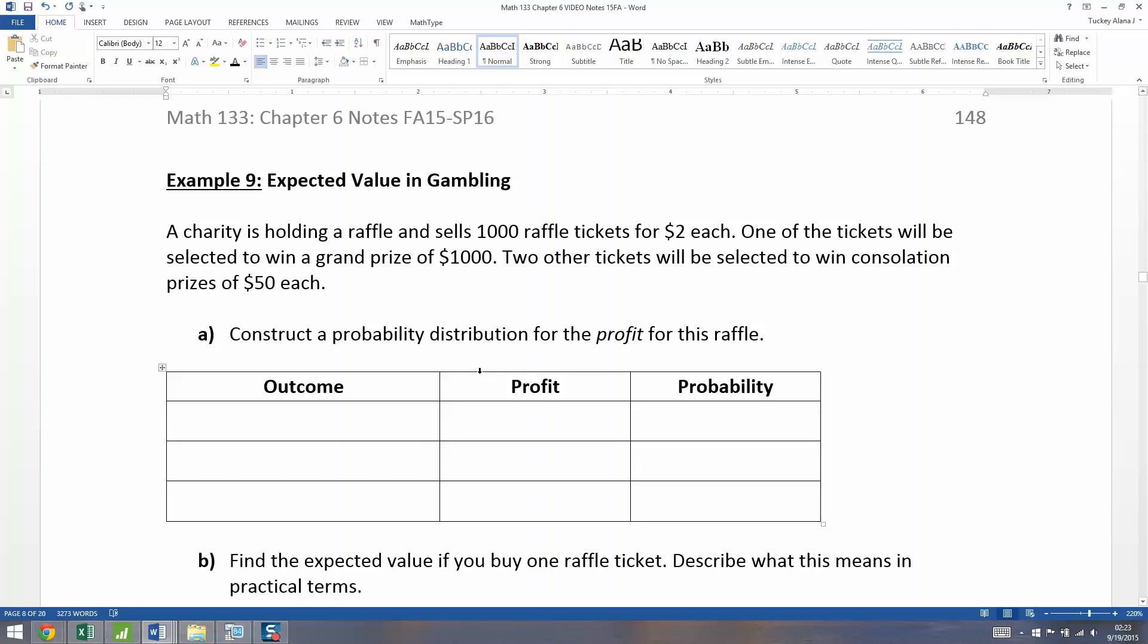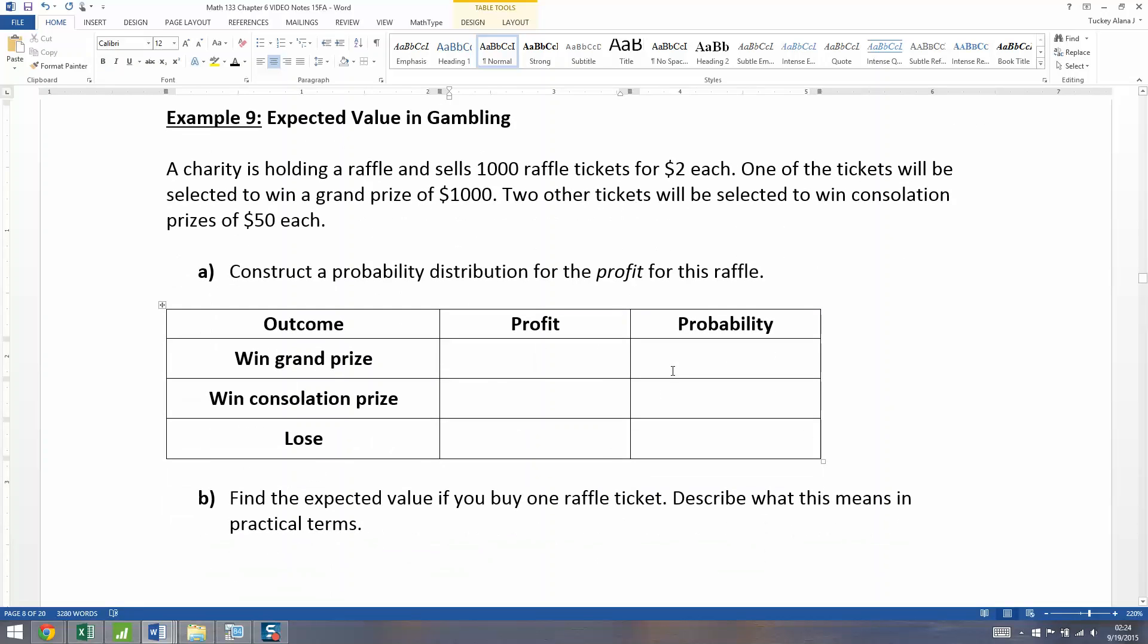Now, what about that gambling CEO? Let's suppose that person's going to a charity raffle, because expected value is a very big deal with gambling. We're going to analyze it a few different ways. So if the charity is holding a raffle and sells a thousand raffle tickets for $2 each, one of the tickets will be selected to win a grand prize of $1,000. Two other tickets will be selected to win consolation prizes of $50 each. So we need to construct a probability distribution for the profit on this raffle.